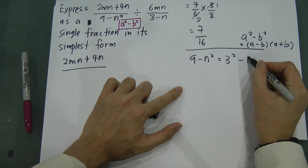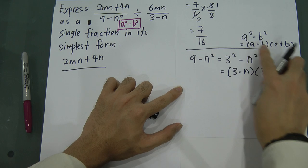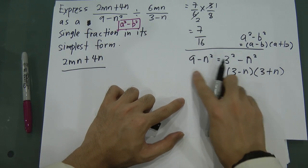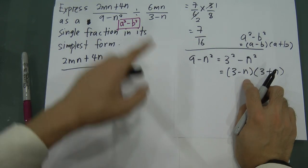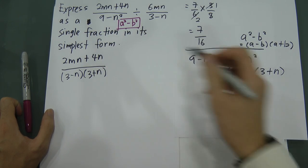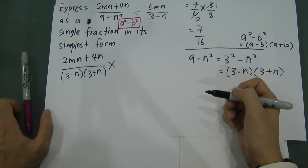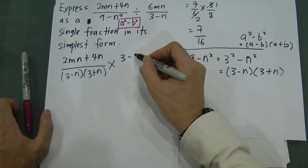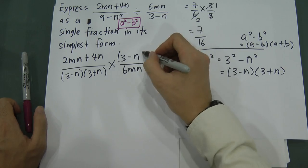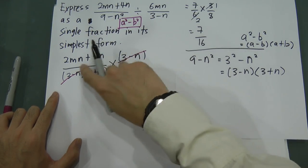Using the formula, (9 minus n-squared) becomes (3 minus n)(3 plus n). Then, since we have division, we flip the second fraction and change to multiplication. The denominator becomes (3 minus n) divided by 6mn after flipping. Now (3 minus n) appears in both numerator and denominator, so we can simplify — they cancel to give 1.